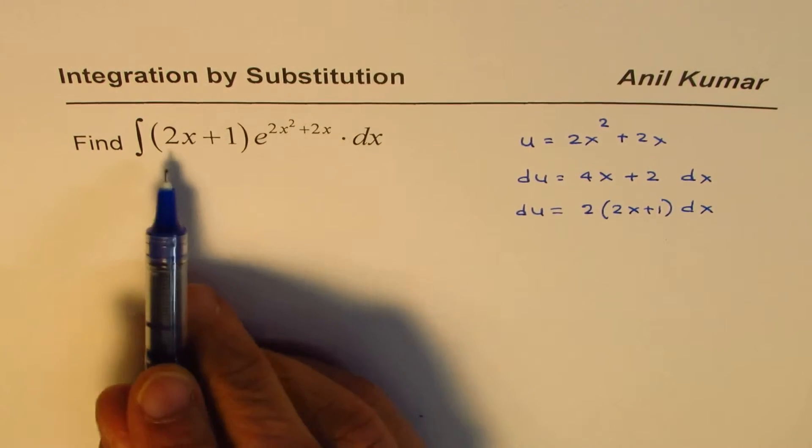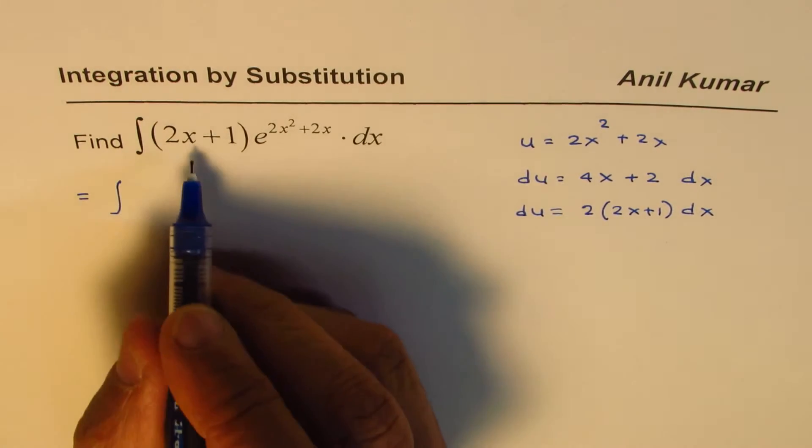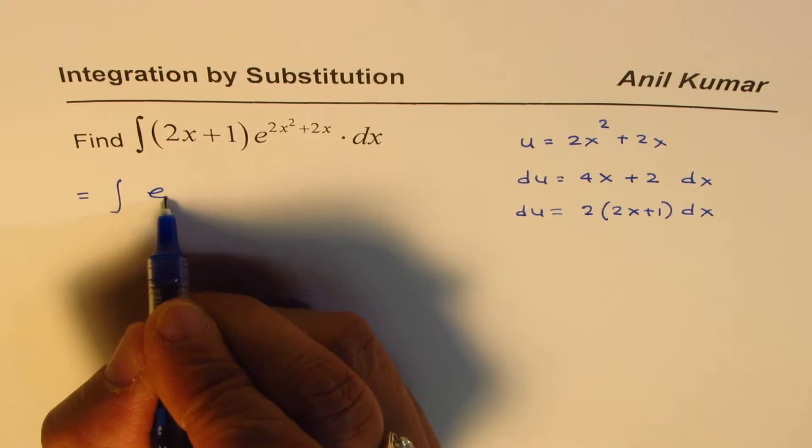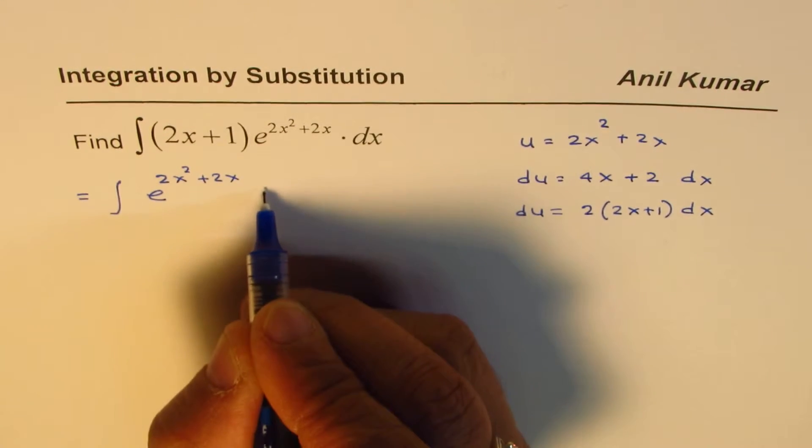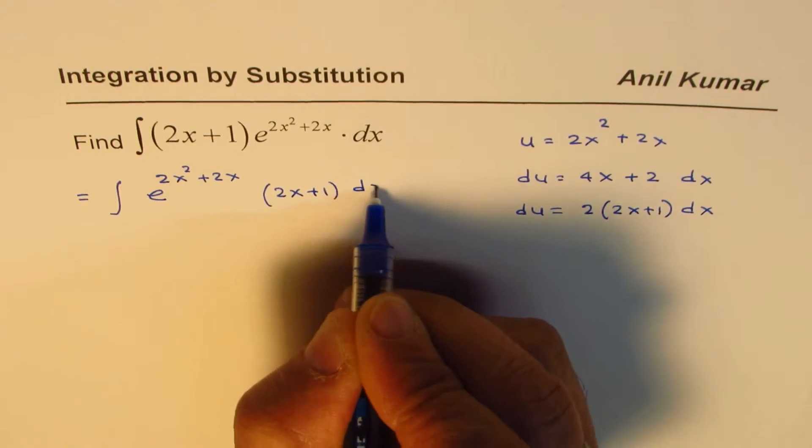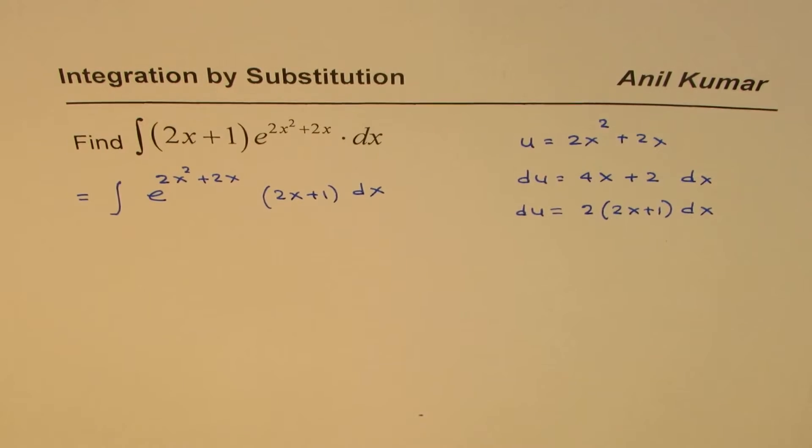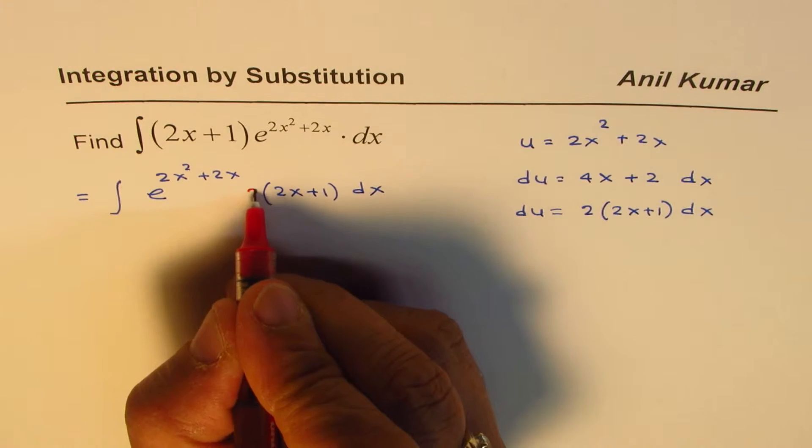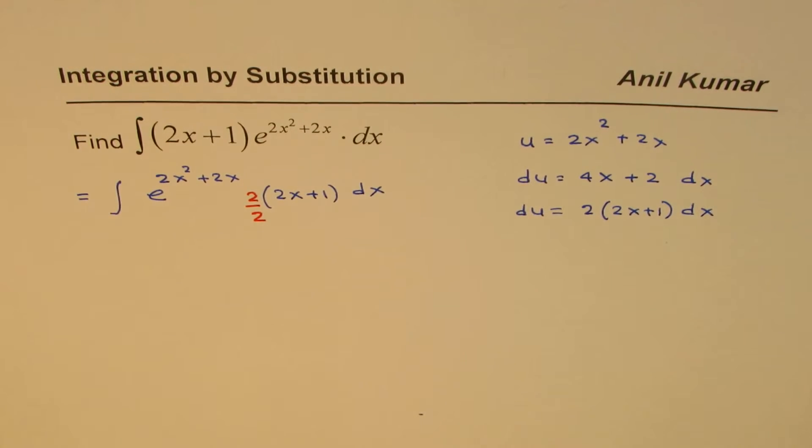Now you can see the relation. Let me rewrite this. We could rewrite this as e to the power of 2x squared plus 2x, and here we have 2x plus 1 dx. Since it is 2 times, what we can do is multiply and divide by 2. It is the same thing.